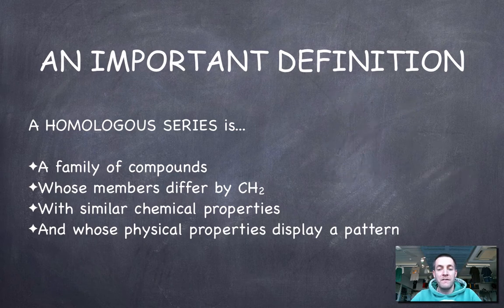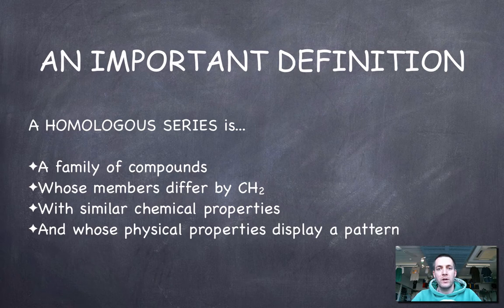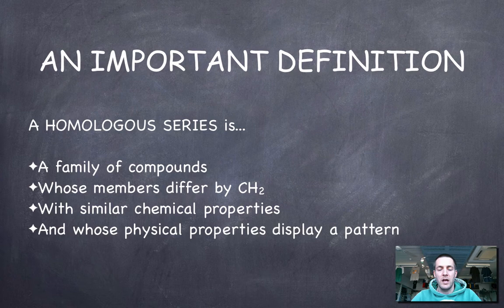They'll have similar chemical properties. Why will they have similar chemical properties? Because they've got similar features. They've got similar arrangements of atoms. And that means they'll react in similar ways. And their physical properties will display a pattern. Now, this is really important. We'll come on to it at the end of this film. But make sure that you remember what we mean by a homologous series. It's a really important definition to have in mind.